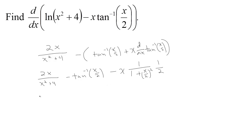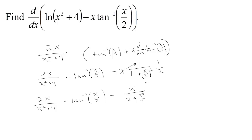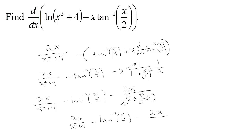Putting it together: we have 2x over x²+4, minus arctan(x/2), minus x times the arctan chain rule result. Multiplying top and bottom by 2 gives 2x upstairs and x²+4 downstairs for that term. Working through the algebra, 2 times 2 is 4 and 2 times x²/2 is x squared in the denominator. Those terms cancel with the earlier 2x over x²+4 term, and we're left with negative arctan(x/2) as the final answer.